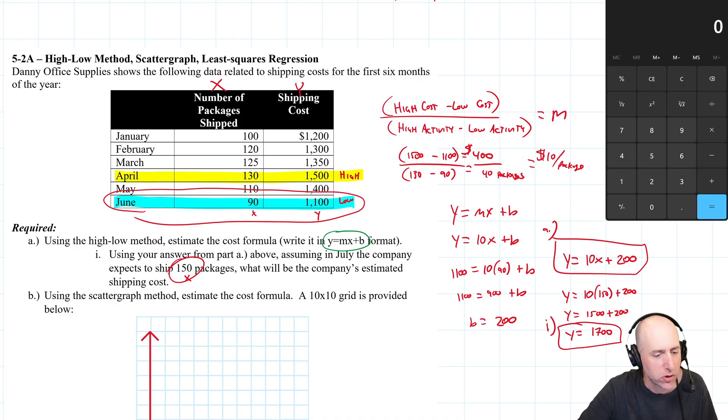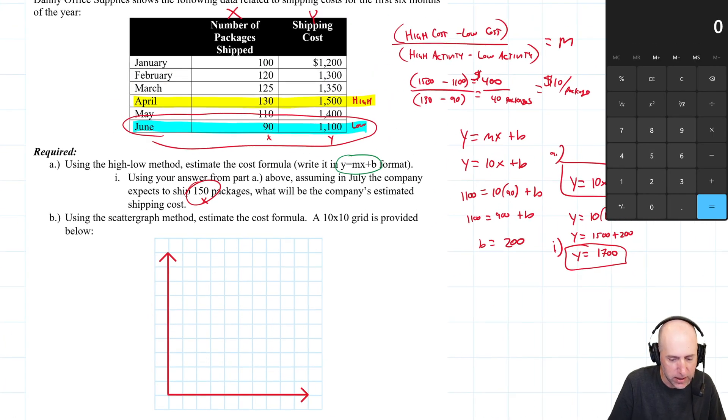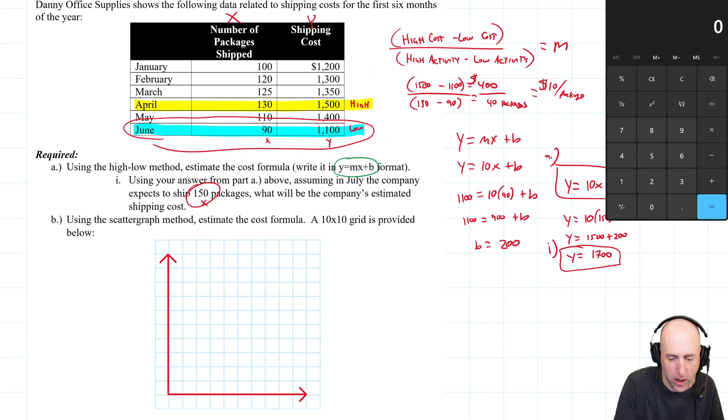This question students lose marks, probably not for the scatter graph, but for not doing a good job on their axis, not doing a good job with their labels. And here's what I mean. Let's look at the cost. So cost is the y axis, so cost goes on the y and packages shipped goes on the x.